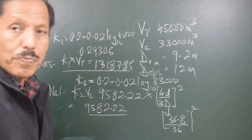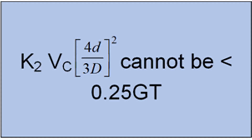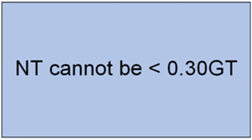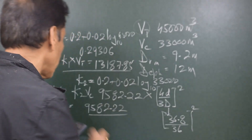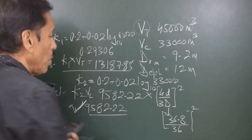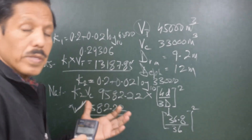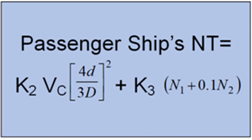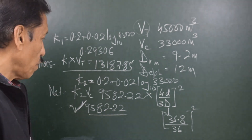Now, the net tonnage cannot be less than 25% of the gross tonnage. Checking: 25% of 13,187.85 is approximately 3,296.96, and 9,582.22 is clearly more than that. Checking also against 30% of gross gives 3,956, which this value also exceeds. So 9,582.22 can be taken as the net tonnage. We have done the calculations for cargo ships. If a passenger ship is involved, there is one more term to be added, which is not covered here. So the gross tonnage is 13,187.85 and the net tonnage is 9,582.22.